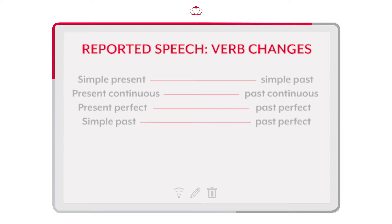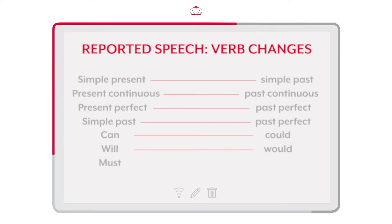Modal verb changes: 'can' changes to 'could'; 'will' changes to 'would'; 'must' changes to 'had to'; 'may' changes to 'might'.